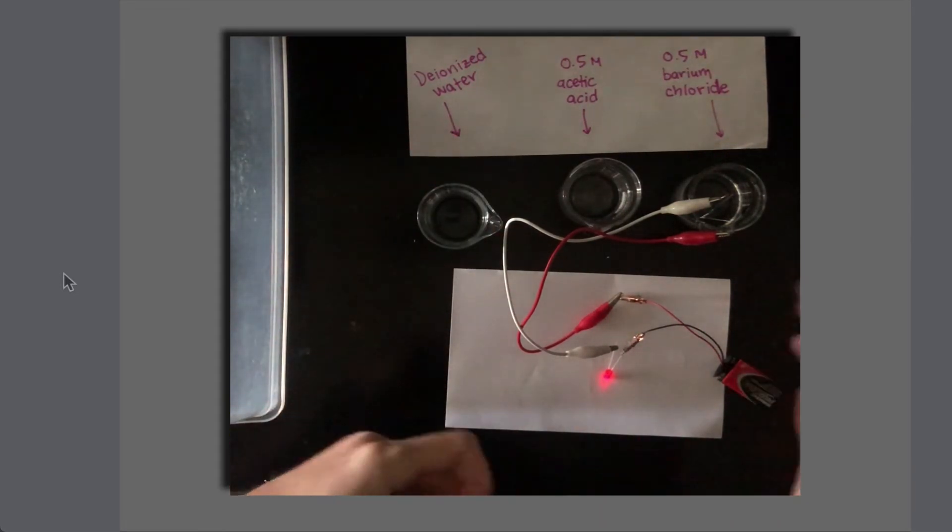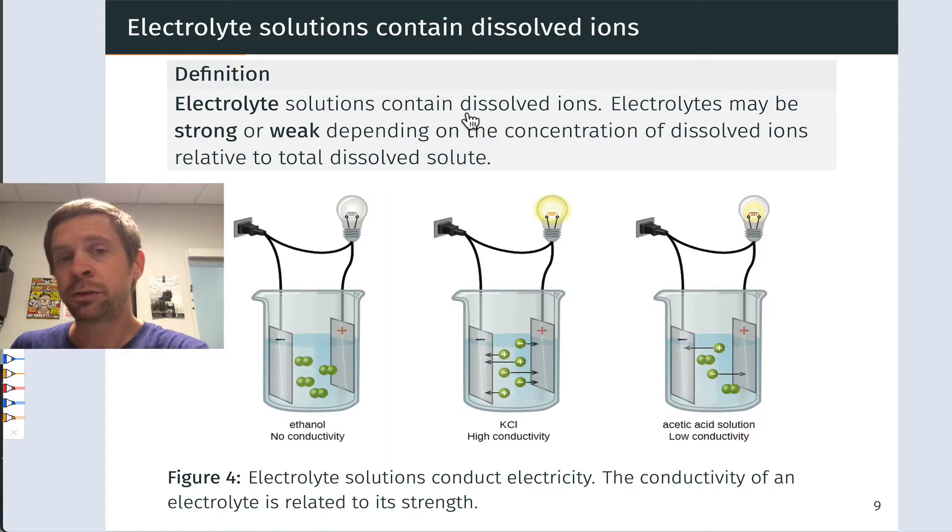Electrolyte solutions are defined as those that contain dissolved ions. Because the ions carry charge and are mobile in the solution, can flow throughout the solvent, electrolyte solutions can conduct electricity.